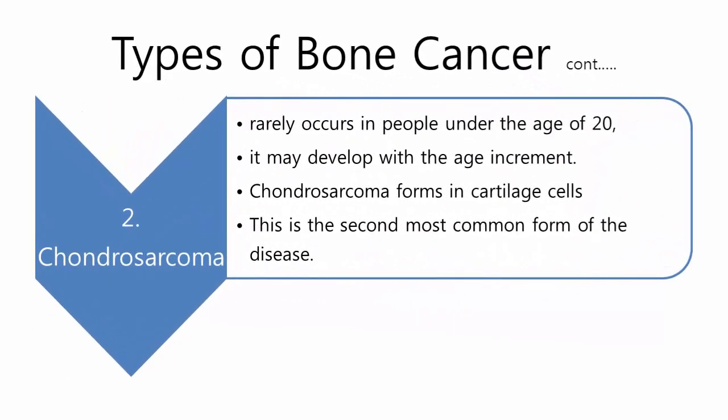Chondrosarcoma rarely occurs in people under the age of 20, and may develop with increasing age. It forms in cartilage cells and is the second most common form of the disease.